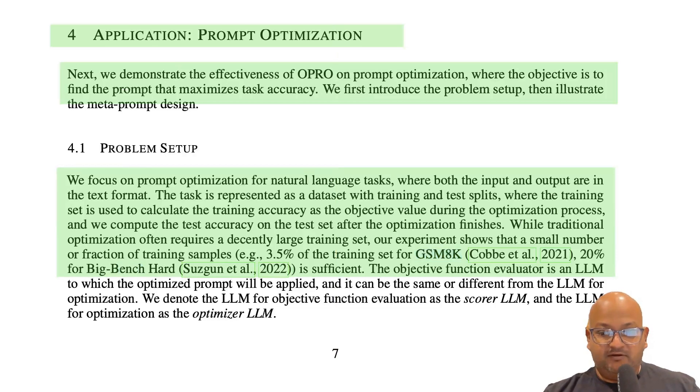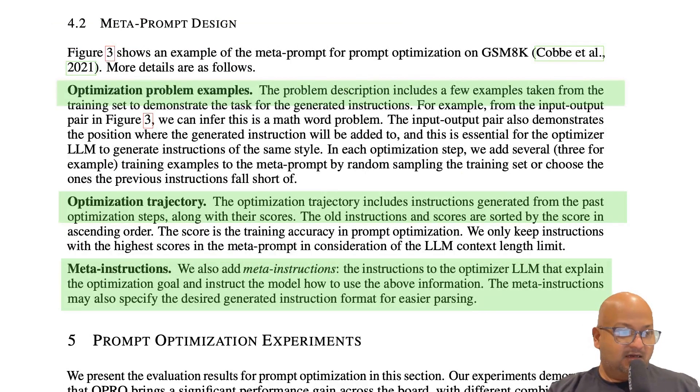Now people have tried various prompting strategies, things like chain of thought, but they've always had to be imaginative and just try out various prompts to see what performs best. And here the authors are treating that itself, the act of finding a good prompt to solve these benchmarks. They're treating that itself as an optimization problem.